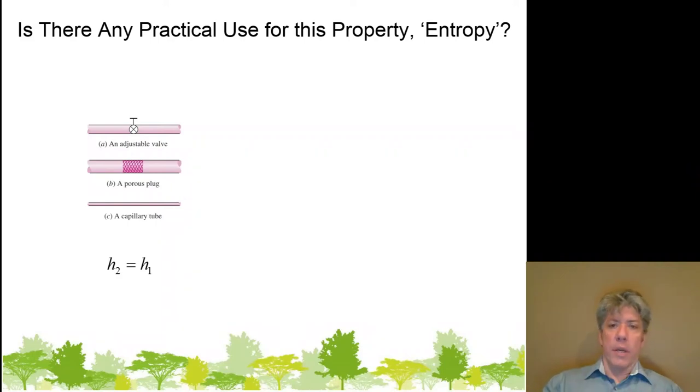Okay, so we've come through all this, and we've got this property called entropy. But so far, this has a little bit to say about entropy being generated, the quality of energy, but we already kind of knew that. And it's been applied to the Carnot cycle. So what?